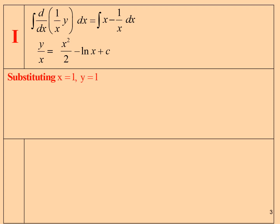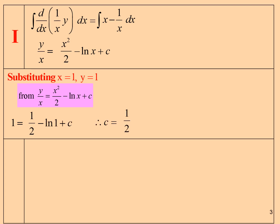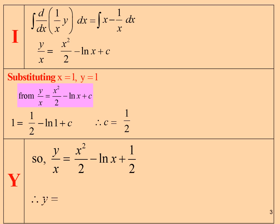Finally, substitute x = 1 and y = 1 into the equation to find C. We get C = 1/2. So y/x = x²/2 - ln x + 1/2.